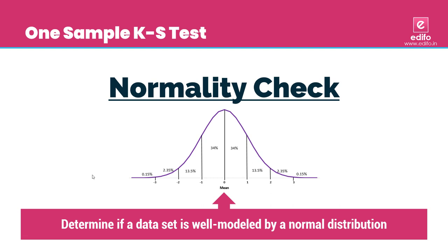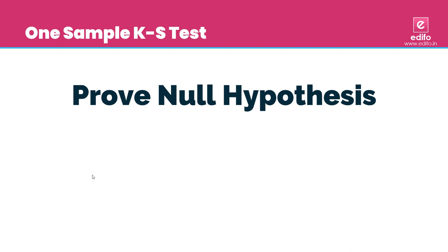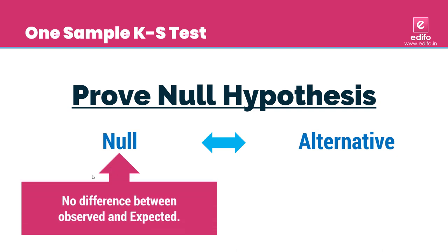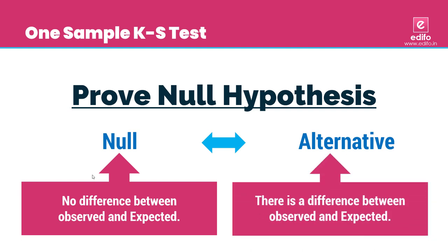The next thing is that this test is used to evaluate the null hypothesis. There are two types of hypotheses: null and alternative. In the null hypothesis, there is no difference between observed and expected. In the alternative hypothesis, there is a difference between observed and expected. A link is provided in the description for more information on hypothesis formulation.